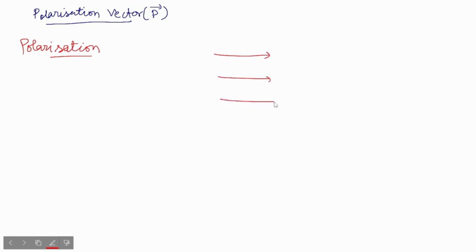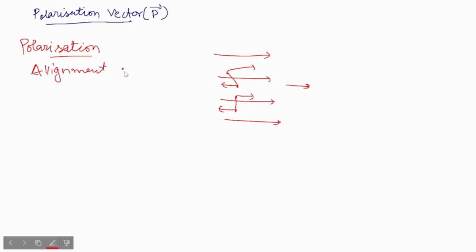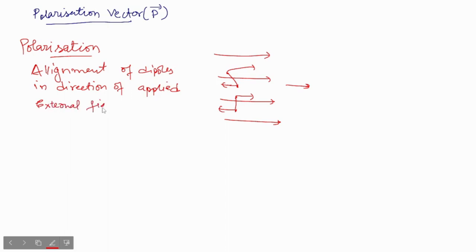Suppose this is a general applied electric field and you have your random dipoles. The alignment of these dipole moments — they may be permanent or induced dipoles — in the direction of your applied electric field, this process is called polarization.